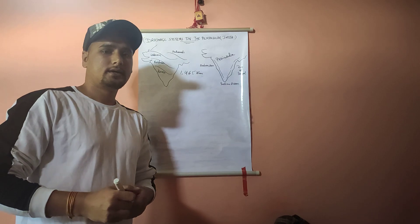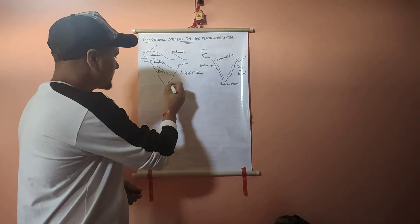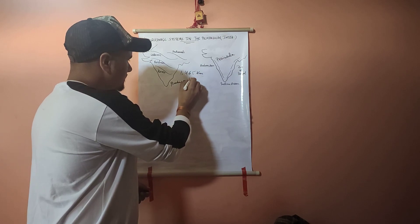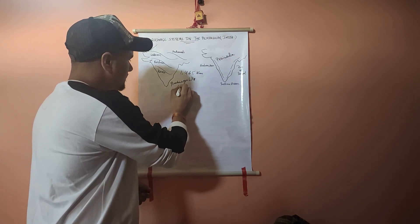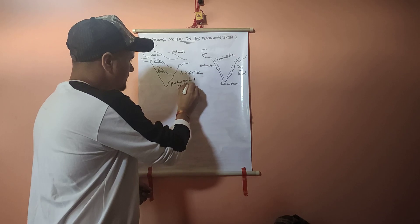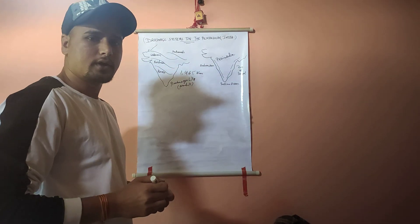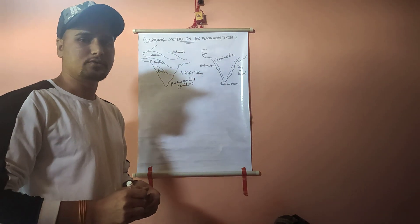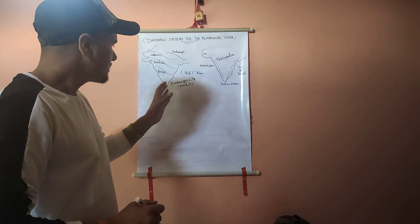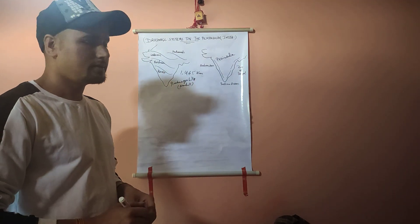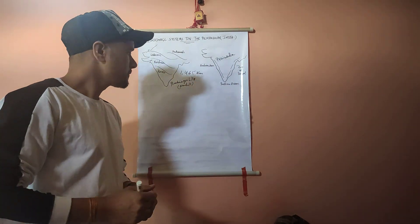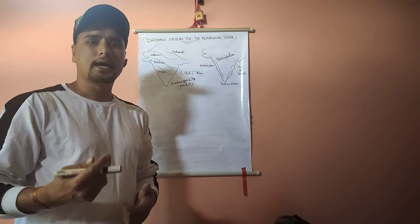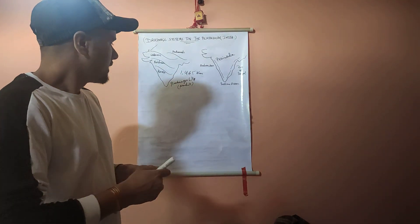The Godavari originates from the Brahmagiri Hills in Nasik district of Maharashtra. After originating in Maharashtra, the river enters Telangana, then Andhra Pradesh, then Chhattisgarh, and then Odisha.